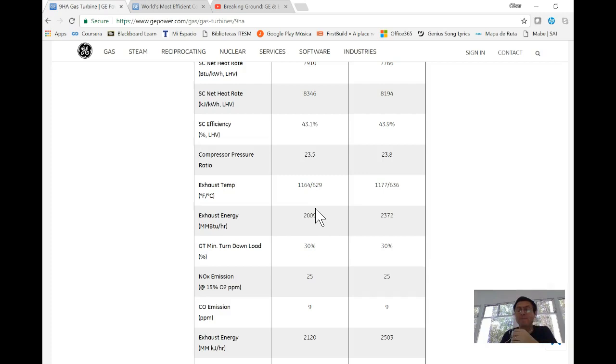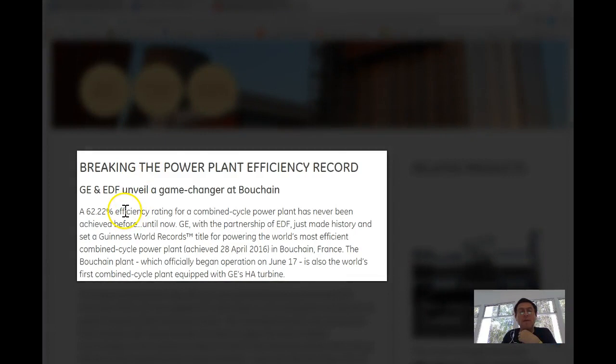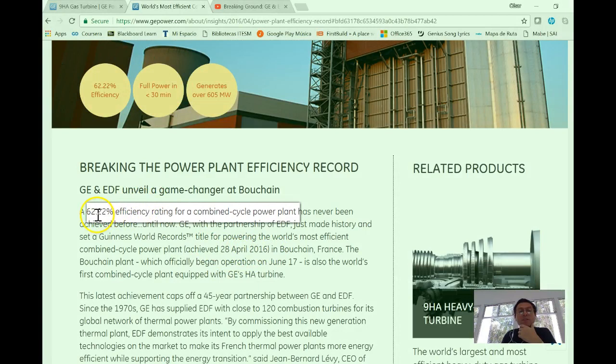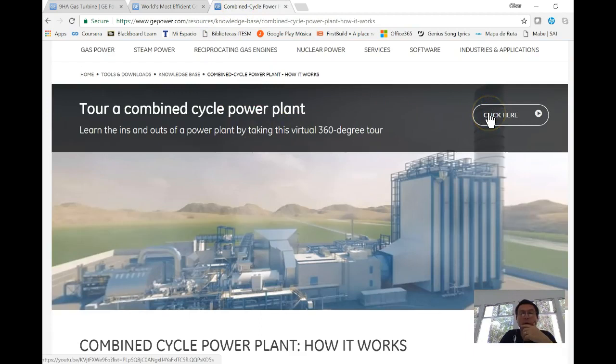Now your book mentions that we have something like 50 percent efficiency. Nevertheless, the world record established last year in 2016 was a 62.22% efficiency using a combined cycle. Let's see a short video.